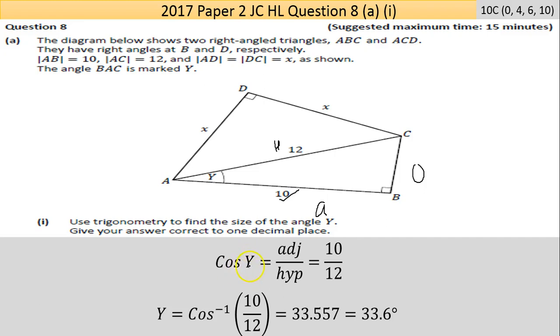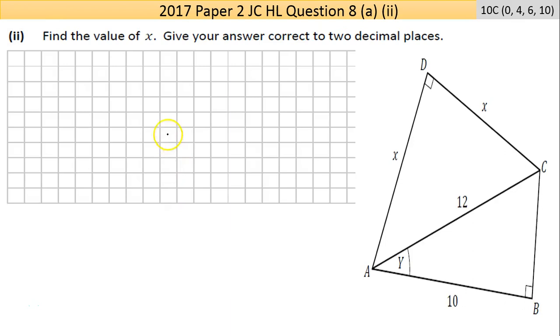So Y equals inverse cosine of the fraction 10/12, which comes up in the calculator as 33.557. I'm rounding to one decimal place so the five here makes the next number go up by one, so I end up at 33.6 degrees.